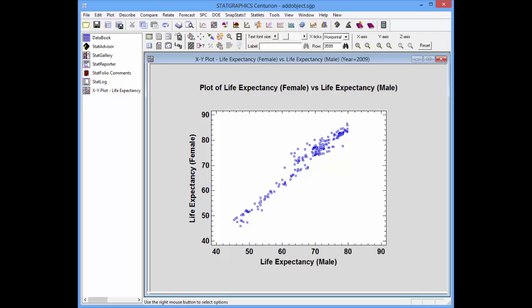Here you see a typical scatter plot using data from the World Bank. It shows for the year 2009 the life expectancy of females on the Y axis and males on the X axis. Each point represents one of the 188 countries in the World Bank's data file.